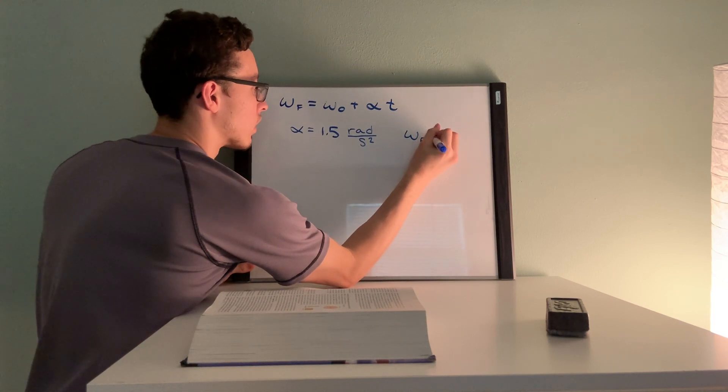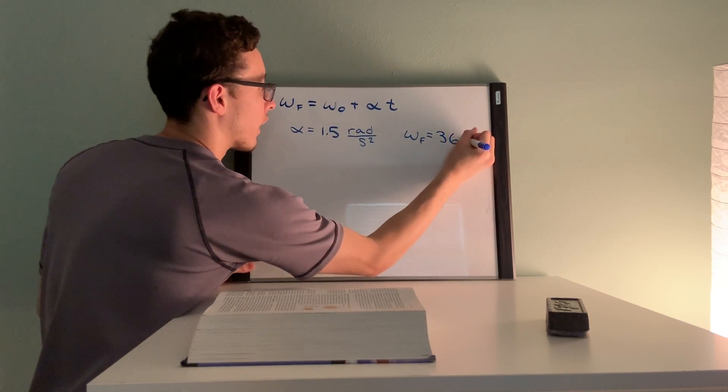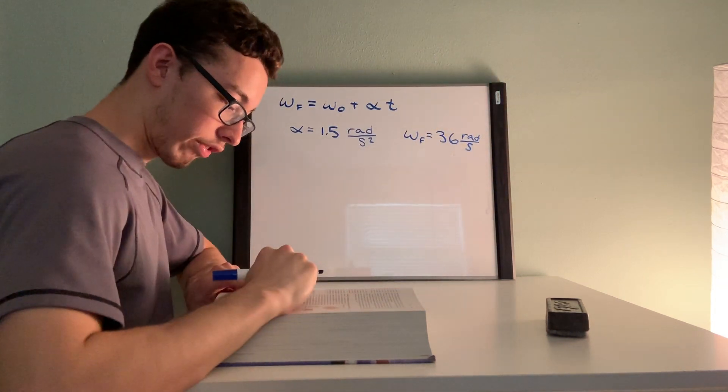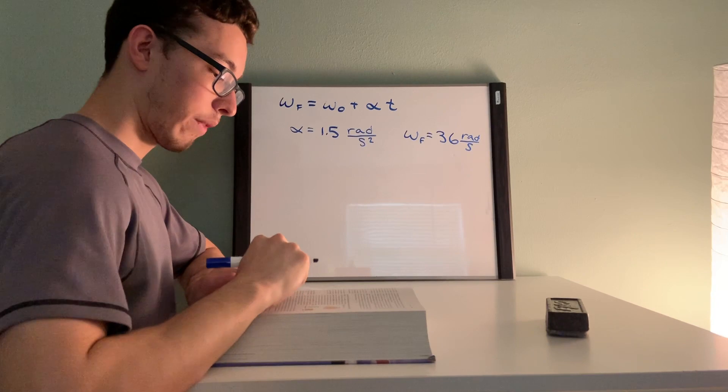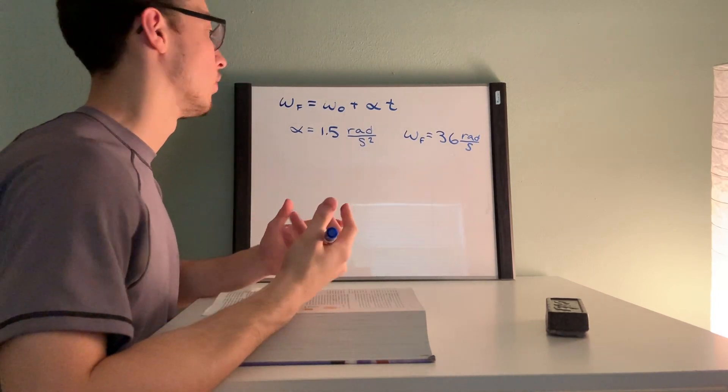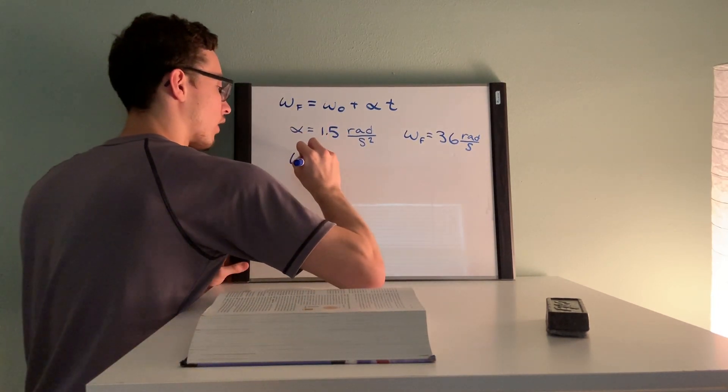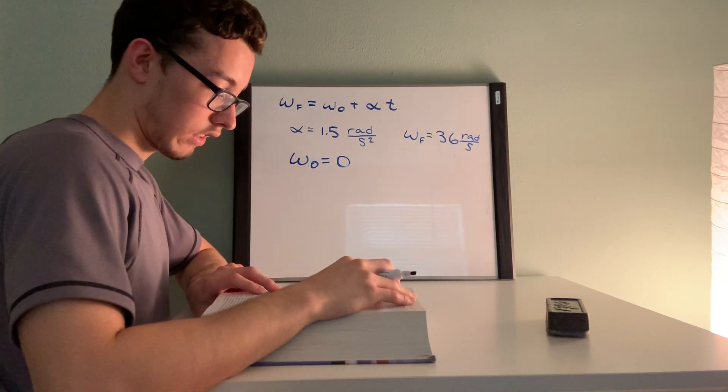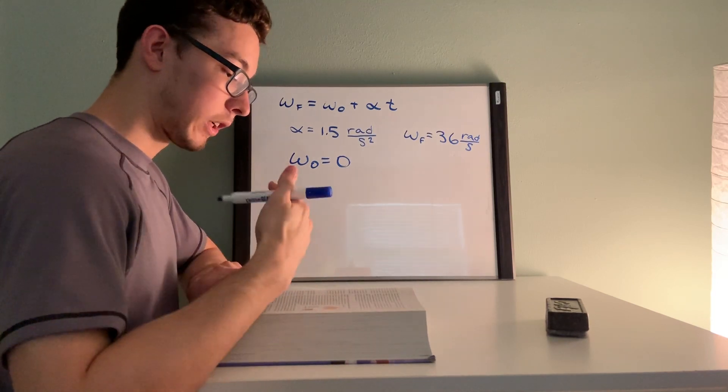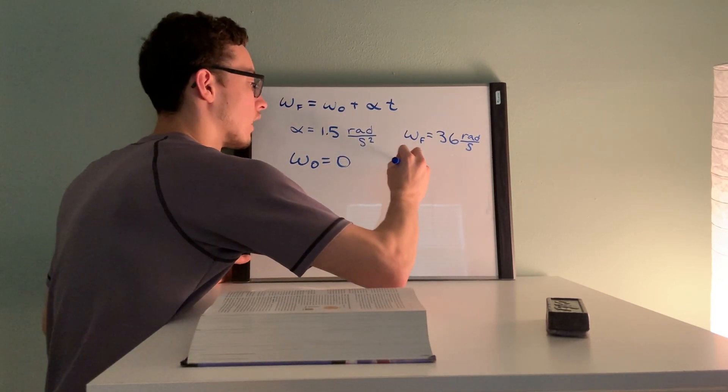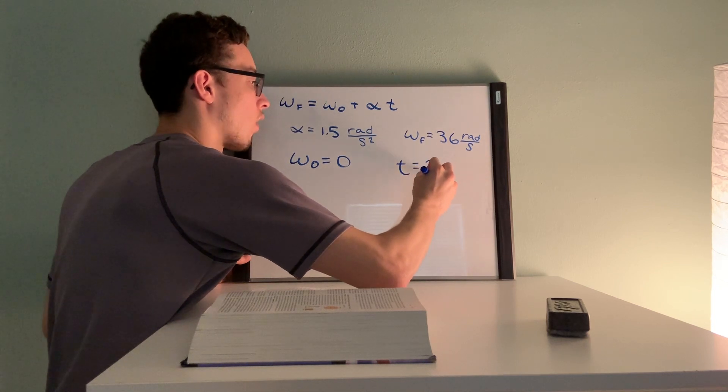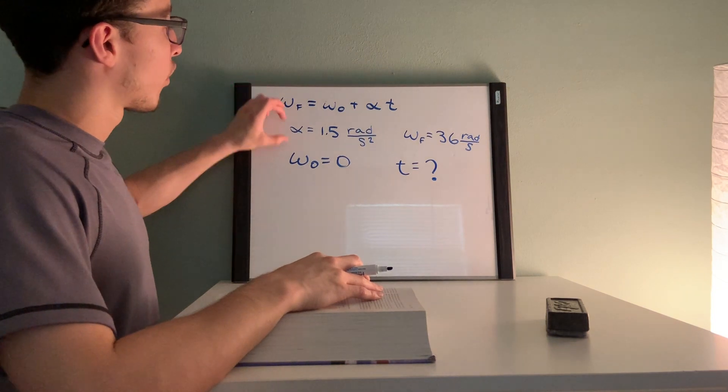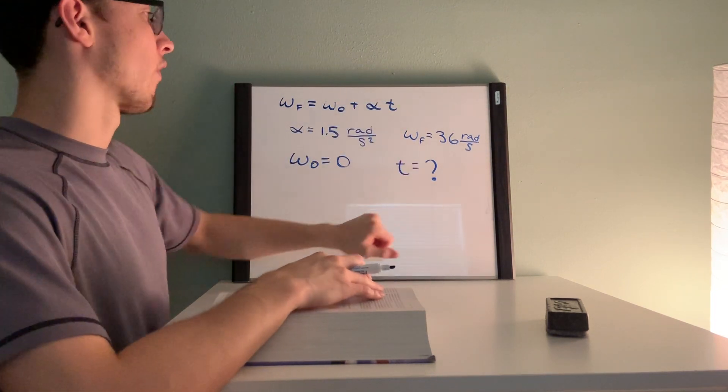Starting from rest, so that means our initial is going to be zero because we're not moving. So initial angular velocity is zero. Next, lastly it's asking how much time does it take, so t is our unknown variable. I always just like to write a question mark. Okay, so we have three variables and one unknown variable.